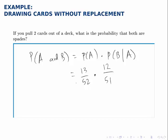So we multiply the probability that we draw a spade the first time times the probability that we draw a spade the second time, assuming that the first card was a spade.